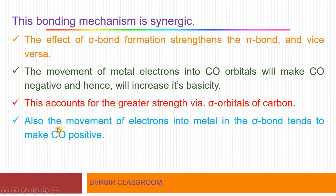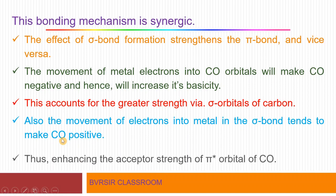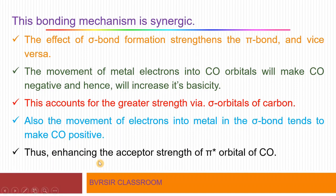Also, the movement of electrons into the metal during sigma bond formation tends to make CO positive. As electrons move to the metal, CO becomes electron-deficient and acquires a positive character. This enhances the acceptor strength of the pi star orbital of CO. When CO becomes more positive, the pi star orbital's tendency to accept electrons increases. Thus, in the synergic effect, the sigma bond reinforces the pi bond and vice versa, and both are strengthened.